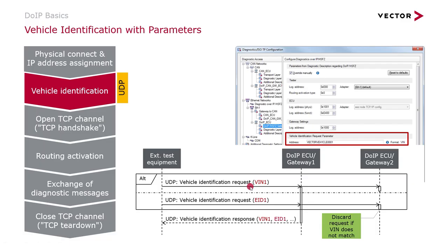The vehicle identification request can also be sent with parameters. If sent with a vehicle identification number or with an entity ID, as indicated here, you can configure this in the address field of the diagnostics ISOTP configuration. In this case, only one ECU will answer — the ECU which has the correct VIN or the correct entity ID. All other ECUs will just discard the message.